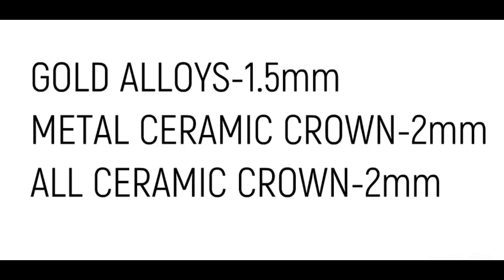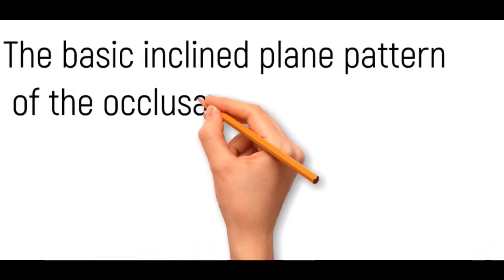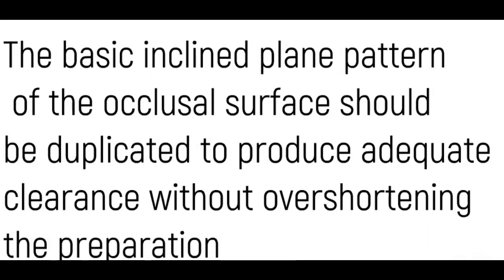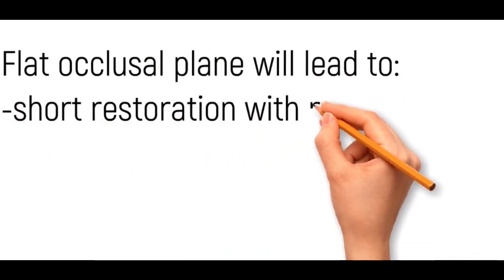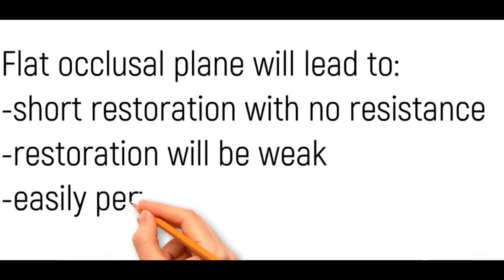While reducing the occlusal surface, you have to follow the basic inclined pattern of the occlusal surface, a complete duplicate to provide adequate clearance without over-shortening the preparation. In this figure you can see the first picture is the exact duplicate of the occlusal surface, while the opposite one is incorrect because it is just a flat plane. The flat plane will lead to a short restoration with no resistance because there are no grooves. The restoration will be weak and easily perforated by finishing procedures.